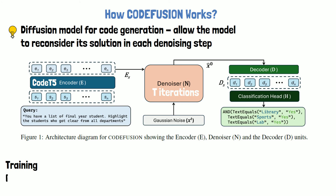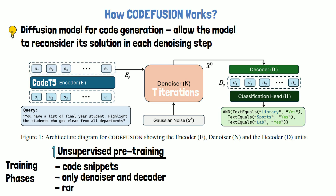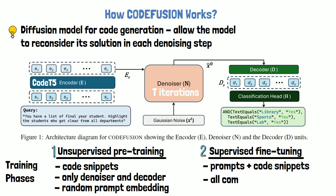The CodeFusion model is trained in two training phases. The first training phase is unsupervised pre-training, where the data contains code snippets only without prompts. In this phase, we train only the denoiser and decoder, and the missing prompt embedding is replaced with random noise. The second training phase is supervised fine-tuning, where the data is combined of both prompts and code snippets. In this phase, all components are fine-tuned, including the encoder.